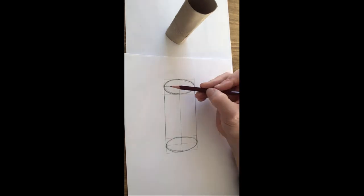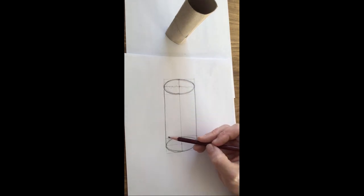We can then rub away our construction lines there and the back of that ellipse, because we can't see it.